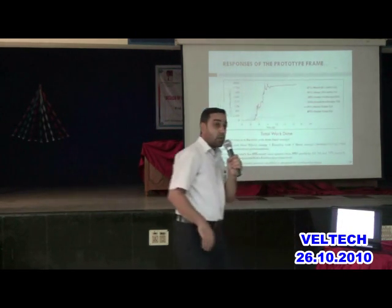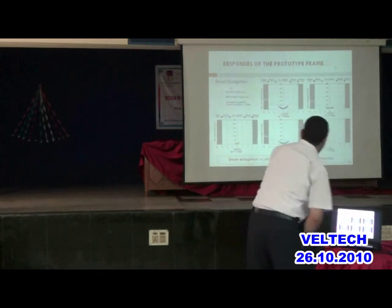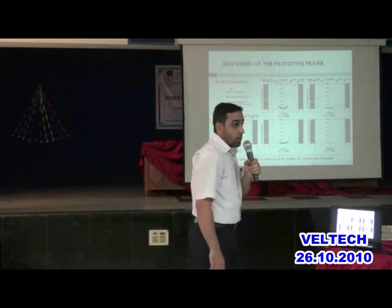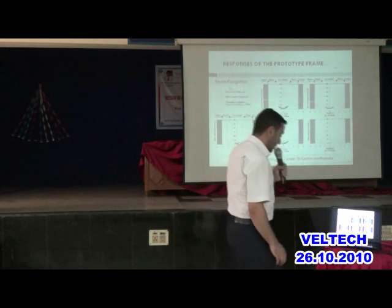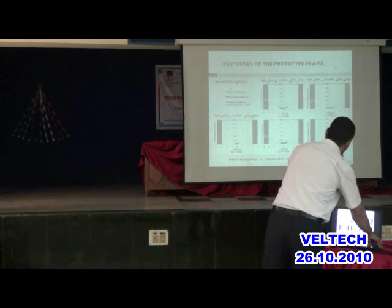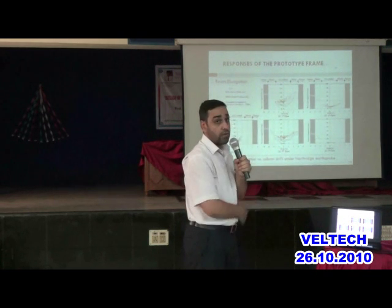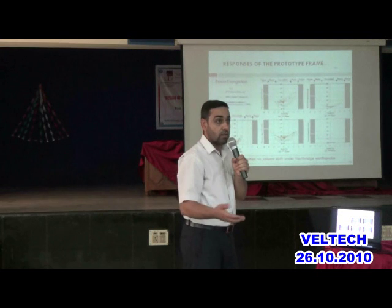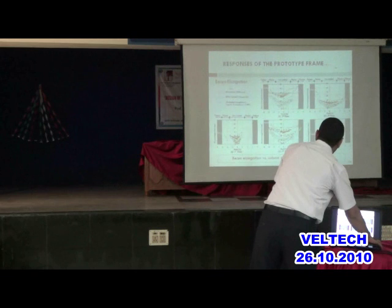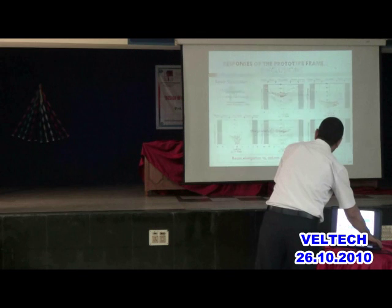This shows the beam elongation hysteresis curves versus drift ratio for the five-story frame under the El Centro and Northridge earthquakes. There is more peak elongation under Northridge because the structure yields — once yielding starts, elongation increases significantly. This effect is even more pronounced under the Kobe earthquake.